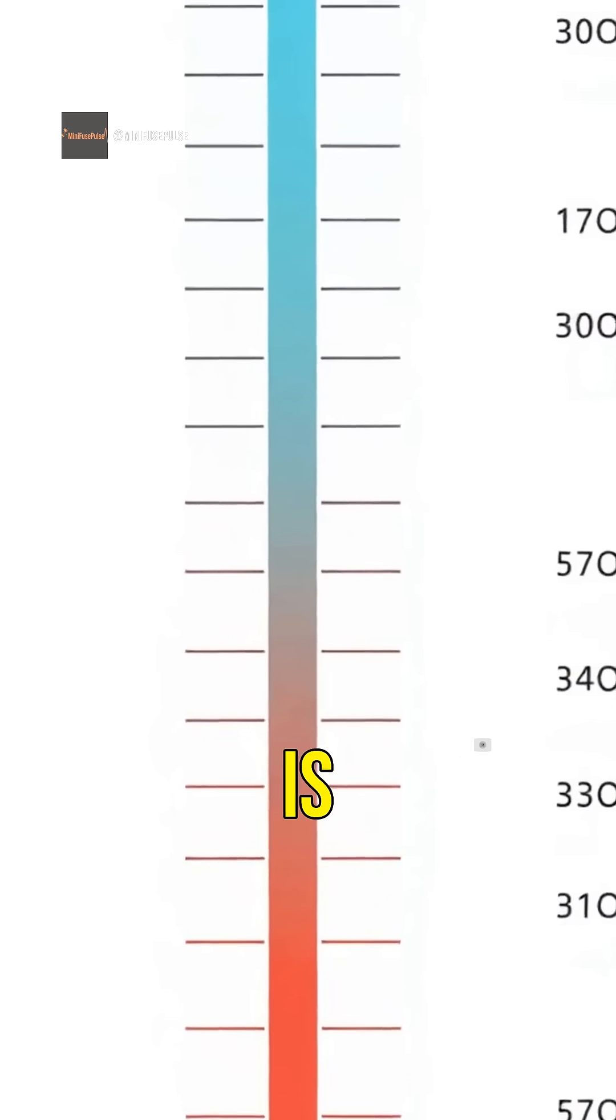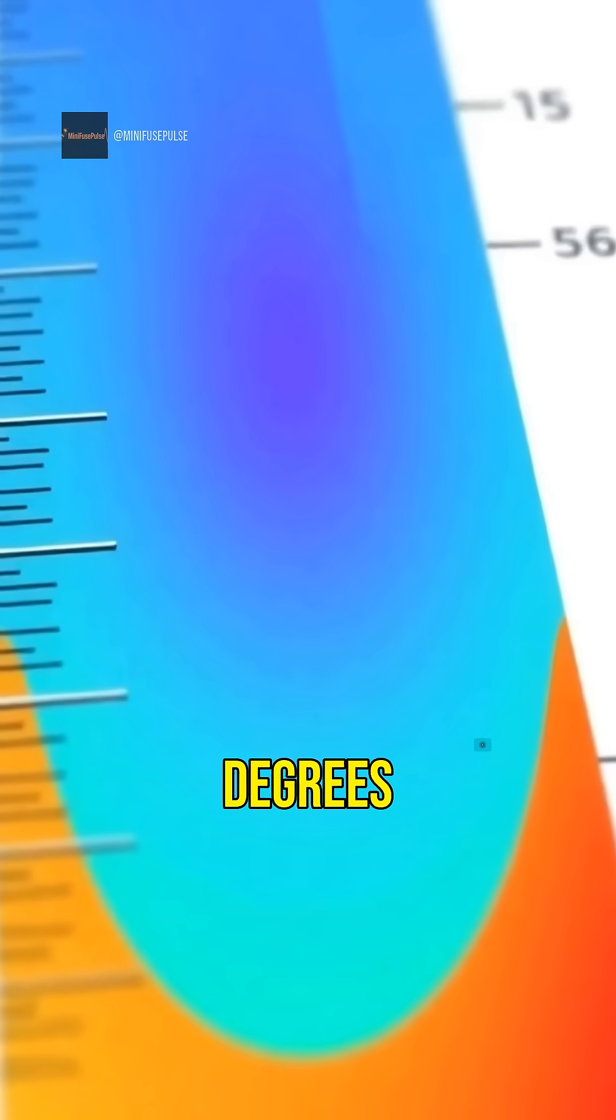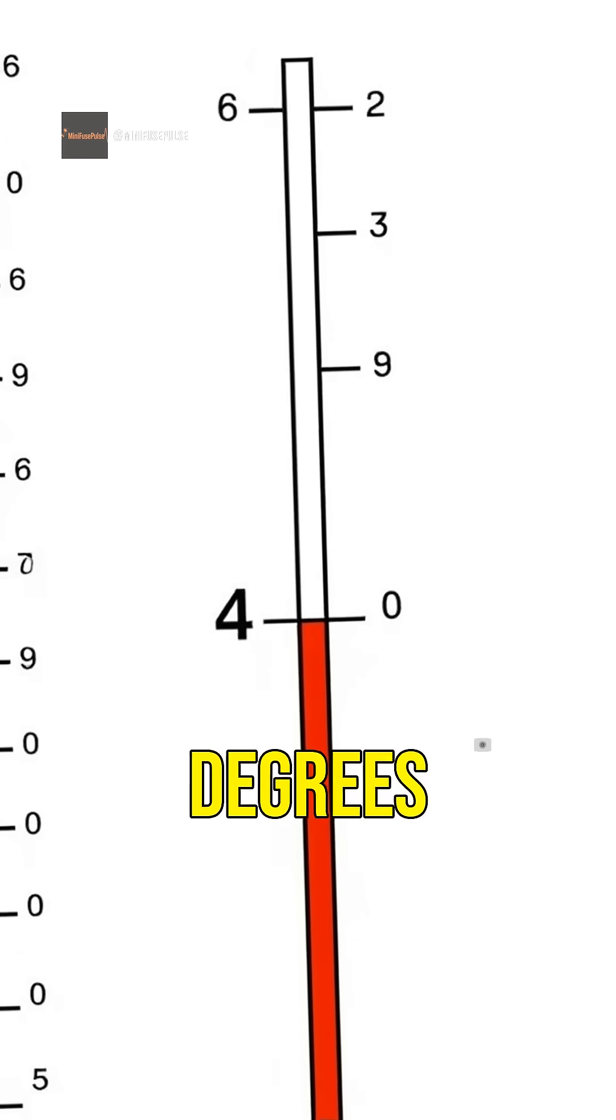On the Kelvin scale, absolute zero is zero Kelvin, which is equal to -273.15 degrees Celsius or -459.67 degrees Fahrenheit.